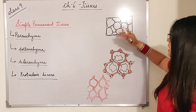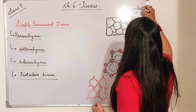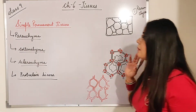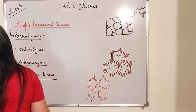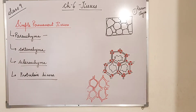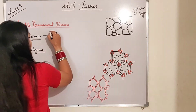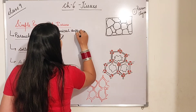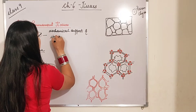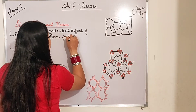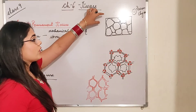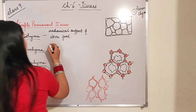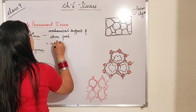First of all, we will be studying about parenchyma. This structure in the diagram is of parenchyma — a simple permanent tissue. The main function of parenchyma is that it helps in the storage of food and provides mechanical support. It provides mechanical support and stores food. As you can see in the diagram, there are intercellular spaces present.